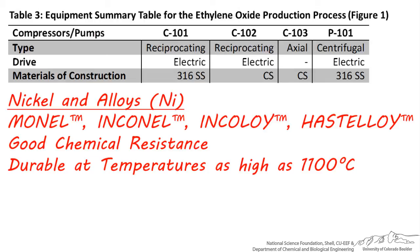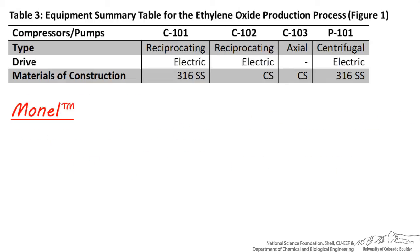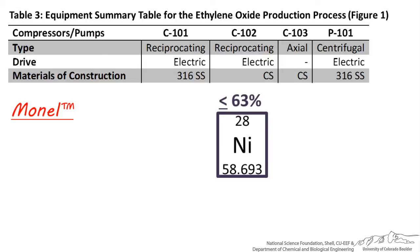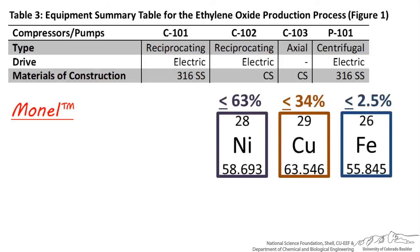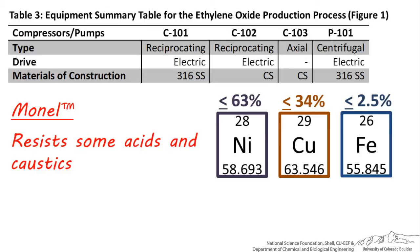Let's look more closely at each of these specialty alloys. The alloy Monel is mostly nickel, with up to 34% copper and a small amount of iron, along with other elements. Monel resists salt water, sulfuric and hydrochloric acid, and caustics such as sodium hydroxide.